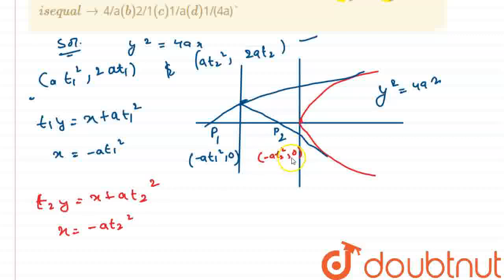So, we got the coordinates of point p1 and p2. We have the parabola as y square is equal to 4ax, so its focus, this is s, will be a comma 0.